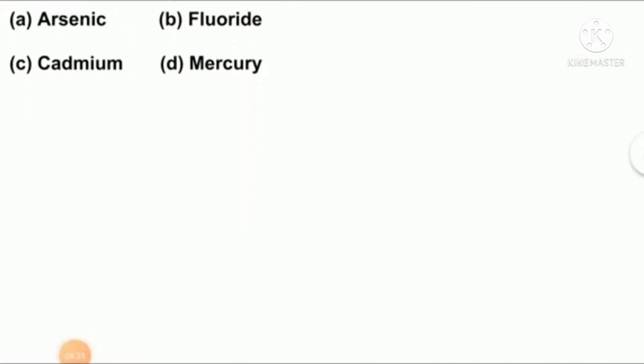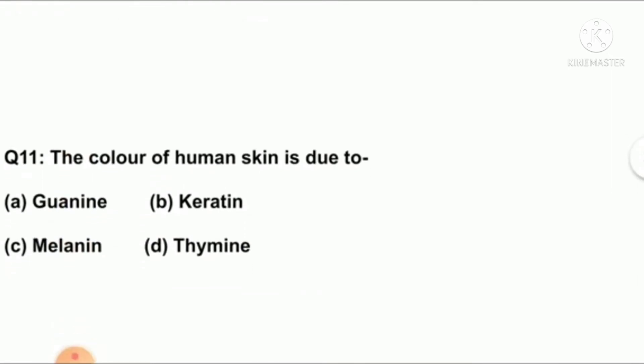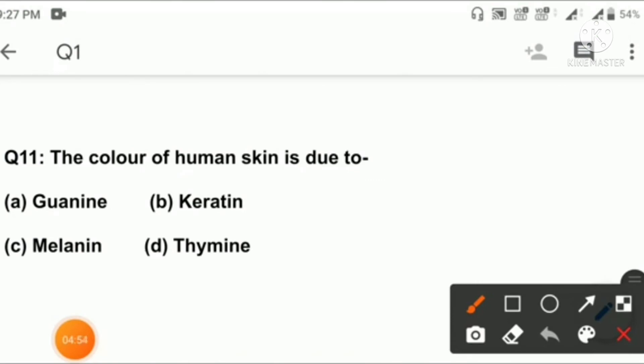Question number eleven: the color of human skin is due to A: Guanine, B: Keratin, C: Melanin, D: Thymine. Right answer is C: Melanin.